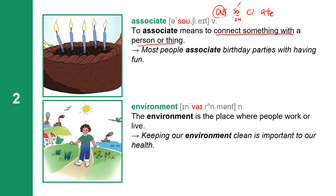Next one: environment. Environment has four syllables: E-N-V-I-R-O-N-M-E-N-T. The suffix M-E-N-T is a nominal suffix, which means if you put M-E-N-T, the word becomes a noun. The environment is the place where people work or live. Keeping our environment clean is important to our health.